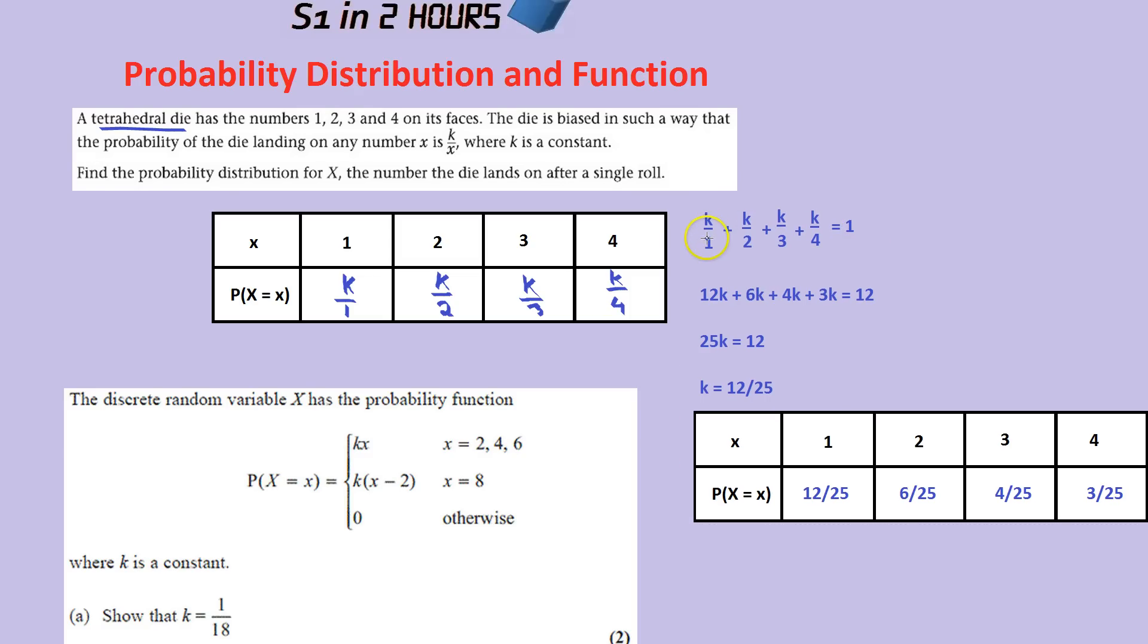Now if you notice, 12 goes into each of these numbers. So if we times everything by 12, that will get rid of each of these fractions. Times this by 12, you get 12 over 1, which is just 12K. Times this by 12, 12 over 2, which is 6K.